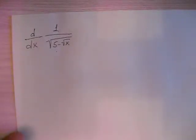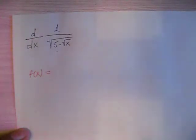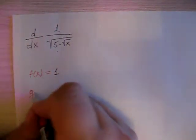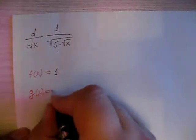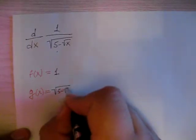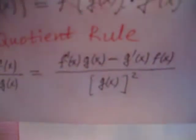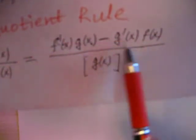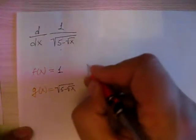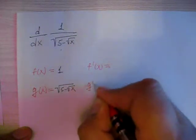So what is our f(x) and what is our g(x)? f(x) is the numerator, and our numerator is 1. g(x) is the denominator, and our denominator is square root of 5 minus square root of x. Now we need to find f'(x) and g'(x).